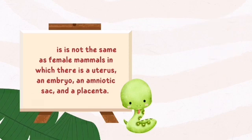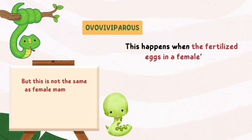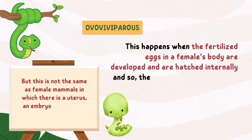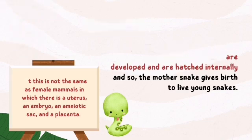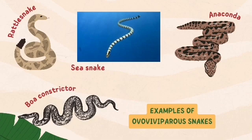This happens when the fertilized eggs in a female's body are developed and hatched internally. And so, the mother snake gives birth to live young snakes. Examples of ovoviviparous snakes are rattlesnake, sea snake, anaconda, and boa constrictors.